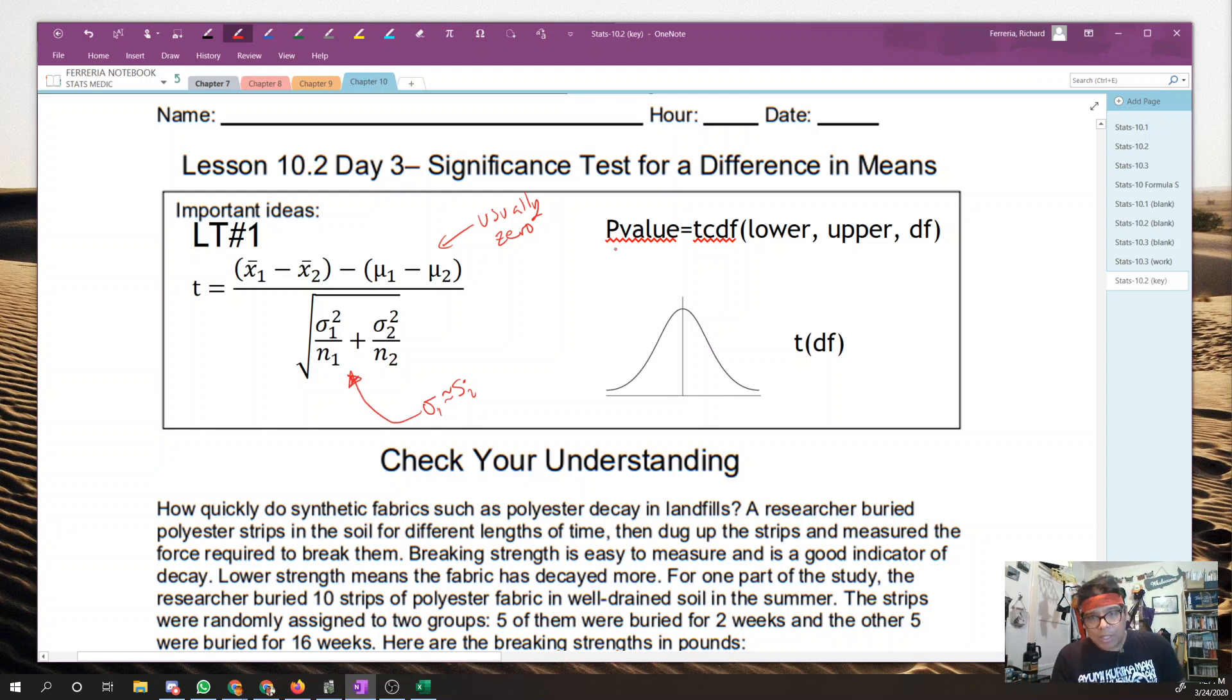Your p-value is a t-cdf, lower limit, upper limit, degree of freedom. And, of course, your curve is going to be a t. Don't forget your degree of freedom, where the df is equal to n minus 1, where n is the smallest n.